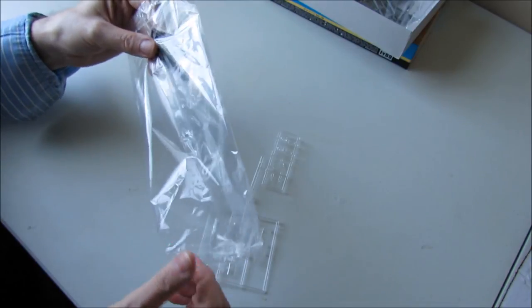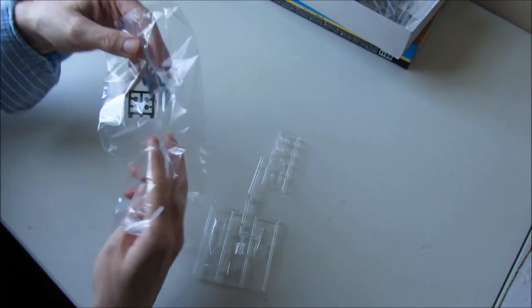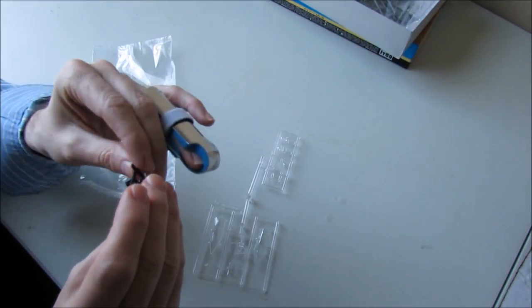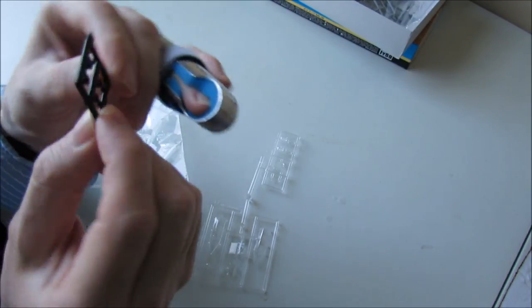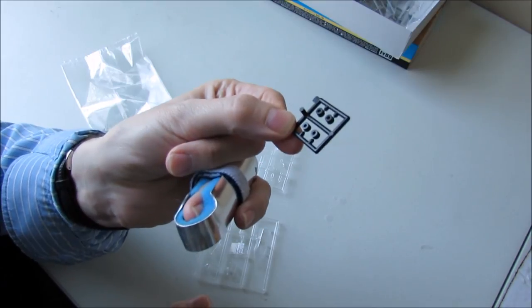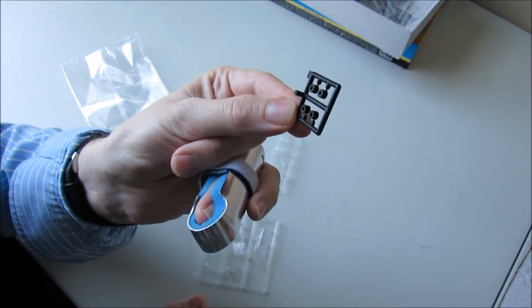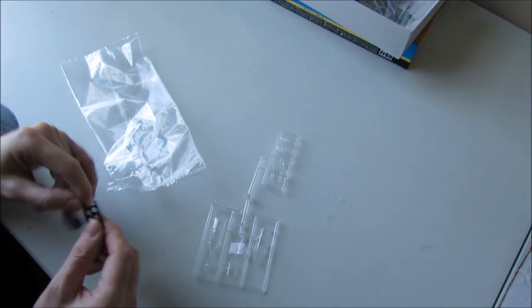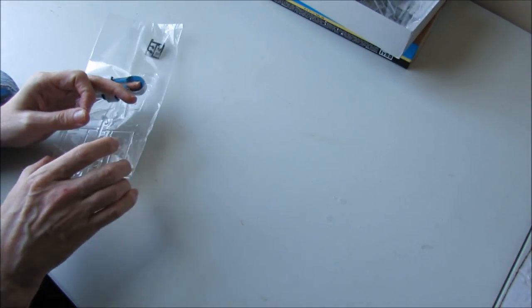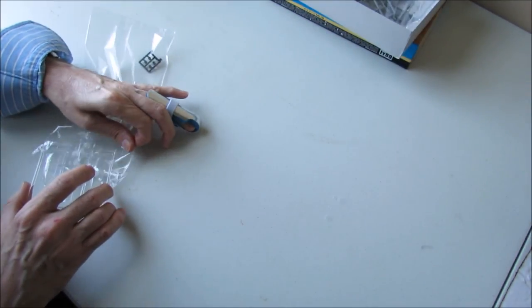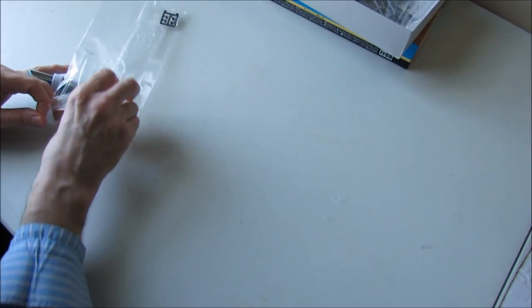And there's a little rubber sprue in here with some what look like spacers or bushings of some kind. So I'm not sure what we're going to do with those until I see the instructions. Put those back in the bag, I don't want to get those scratched up.